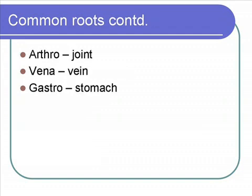The final three roots are 'arthro,' meaning joint — such as arthritis, a disease of the joints in the hands and feet and other areas. 'Vena' means vein; the main vein that leads into your right atria is the vena cava. And 'gastro' means stomach. A good example is gastrointestinal — we've all had stomach problems, and they're often referred to as gastrointestinal issues.